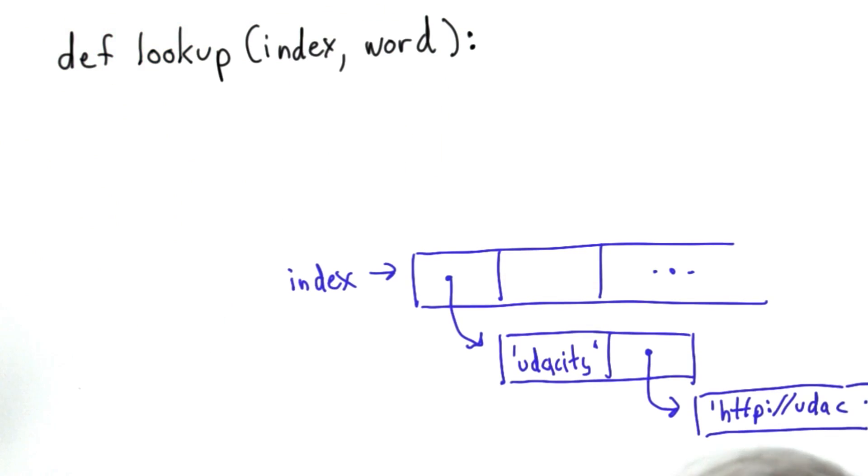And as a reminder, I've drawn the structure of the index here. It's a list. Each element in the list is an entry. Each entry is a list itself, where the first part of the list is the keyword, and the second part is a list of URLs.